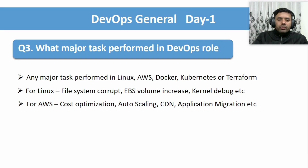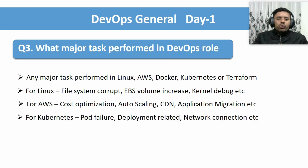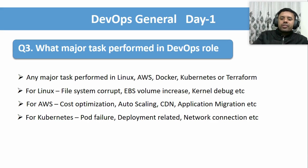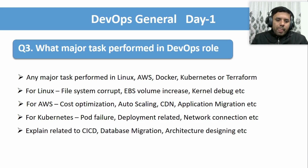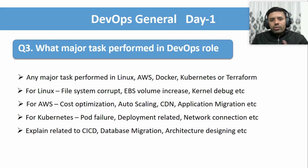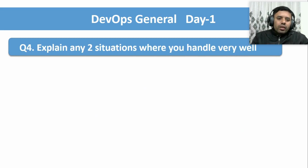For AWS, one of the best examples is cost optimization, along with auto scaling, CDN/CloudFront, and application migration from on-premises to AWS or another cloud. For Kubernetes, you can use examples like pod failures, deployment-related issues, rollback strategies, network connectivity issues, or cluster-related operational issues. You can also explain about CI/CD-related steps, database migration activities, or architecture design — for example, designing a large scalable and secure architecture considering the six pillars of the AWS Well-Architected Framework.